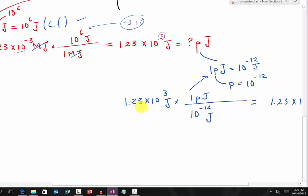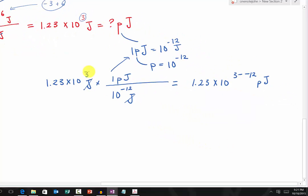We have 1.23 times 10 to the third joule times the conversion factor. Because joule is right here, joule has to be on the bottom to cancel out, so picajoule is on top. Joule is being cancelled out, and we realize that this is now being divided. What do we have to do? We have to subtract the exponent: 3 minus negative 12.